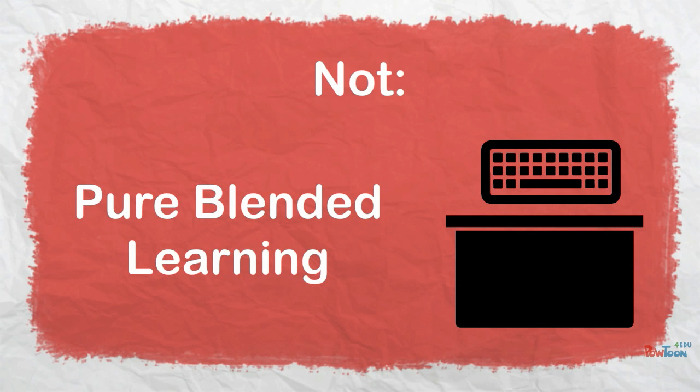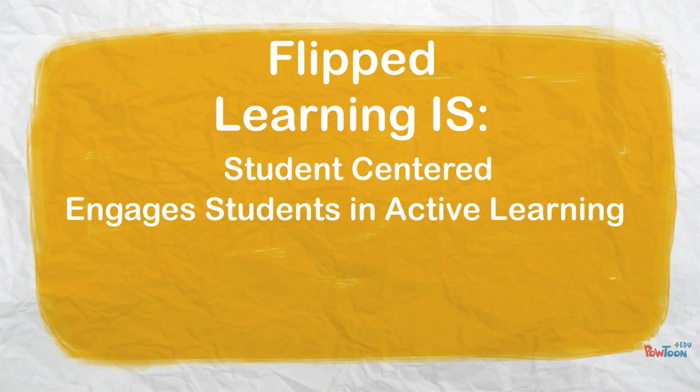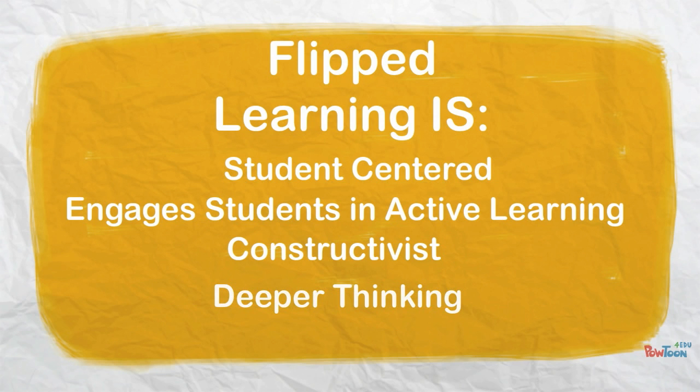So what is flipped learning? First off, it's student-centered — it really focuses the learning and the obligation of the learning on the student. Secondly, it engages students in an active learning model, which research says is a very effective way for students to learn and learn deeper. It's constructivist, where students construct their own meaning in class. And it's deeper thinking — utilizing those higher-level thinking skills of Bloom's Taxonomy.